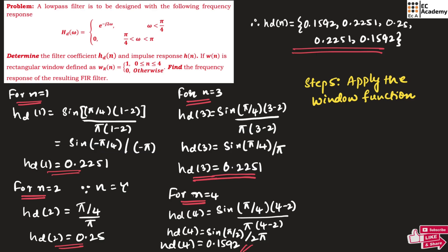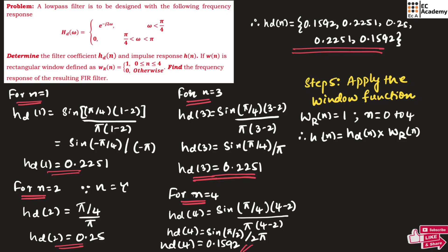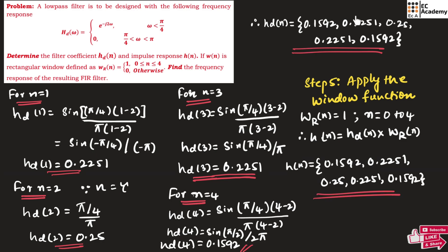Step 5 is to apply the window function. The window function is rectangular with omega r of n equal to 1 for n ranging from 0 to 4. Therefore h of n equals hd of n multiplied by omega r of n. Since omega r of n equals 1, we get h of n equal to {0.1592, 0.2251, 0.25, 0.2251, 0.1592}. This is the impulse response.